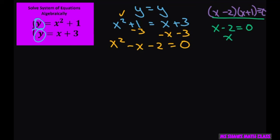So x equals 2, or x plus 1 equals 0, so x equals negative 1. Now we just have to find the y. So our solution is going to be 2 comma something, and negative 1 comma something.